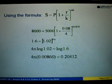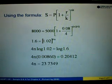We find the value of log 1.02 using the calculator. So we will get 0.00860 equals to log 1.6 is equal to 0.20412. So shift this bracket to the right. We will get 4n equals to 0.20412 divided by this. We will get 23.7349.